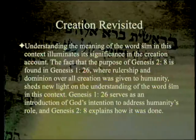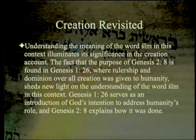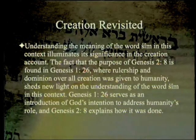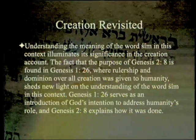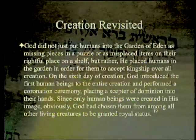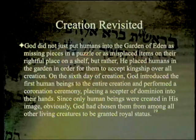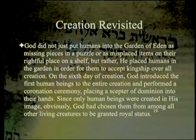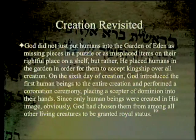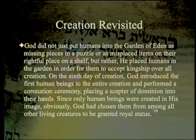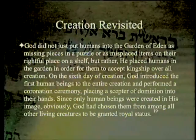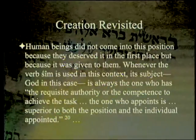Understanding the meaning of 'sim' in this context illuminates its significance in the creation account. The fact that the purpose of Genesis 2:8 is found in Genesis 1:26 — where rulership and dominion over all creation was given to humanity — sheds new light on the word 'sim.' Genesis 1:26 serves as an introduction of God's intention to address humanity's role, and Genesis 2:8 explains how it was done. God placed humans in the Garden in order for them to accept kingship over all creation, performing a coronation ceremony and placing a scepter of dominion into their hands.